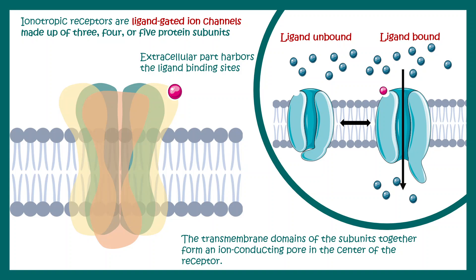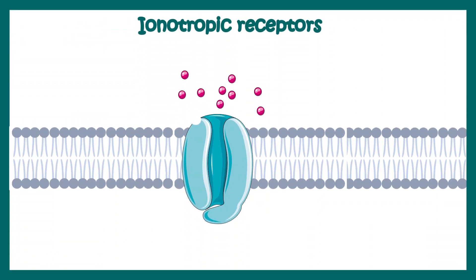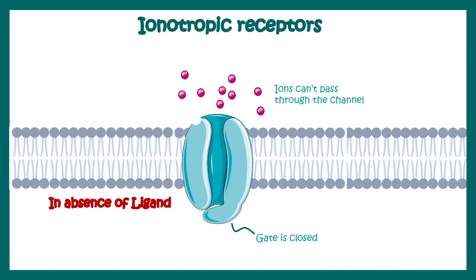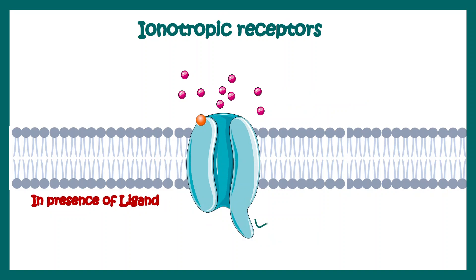For simplicity we'll describe ionotropic receptors using cartoons showing them in two different configurations based on the presence or absence of the ligand. When the ligand is absent, the gate of the ionotropic receptor is closed and ions cannot pass through. When a ligand binds to the extracellular domain, it leads to a conformational change and the gate opens.